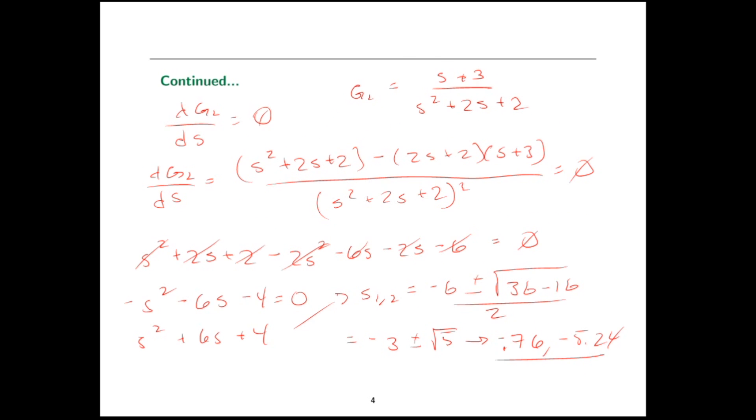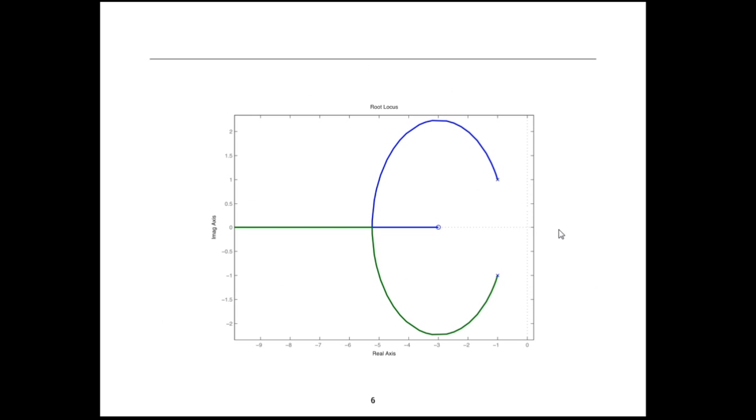Now it so happens that I have one created from MATLAB and there it is. Here's the k equals 0 point, here's k equals infinity. Look at that. It hits the real axis at about 5.24 or so. There's a nice angle of departure about what we estimated 117 degrees and then it bends around and goes into the real axis. But let's go ahead and make this in MATLAB ourselves and just take a look at it.